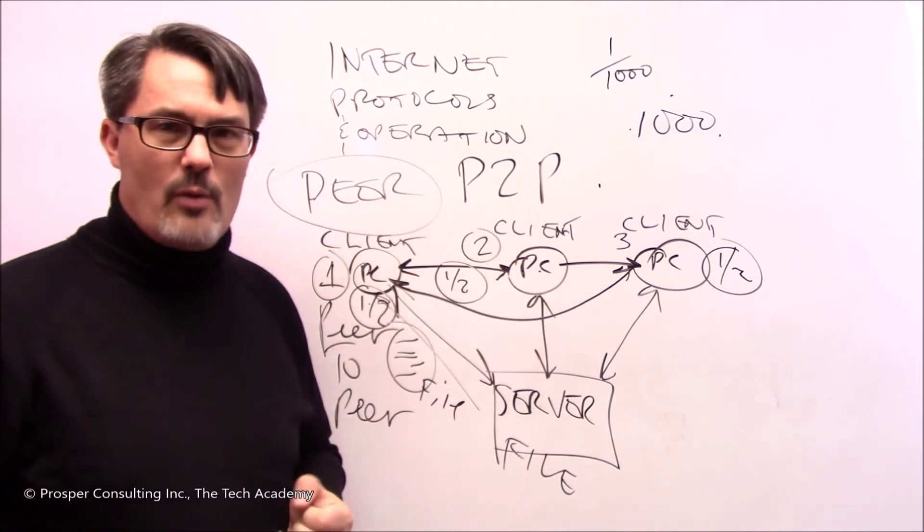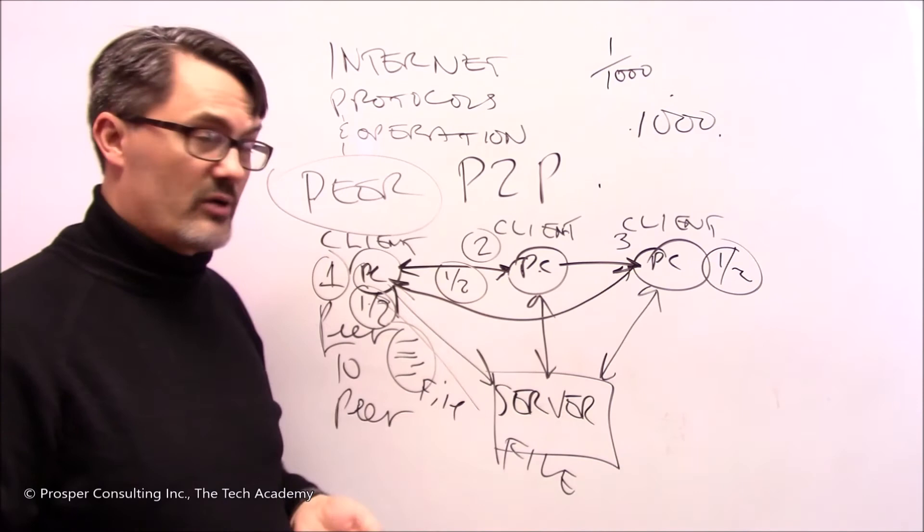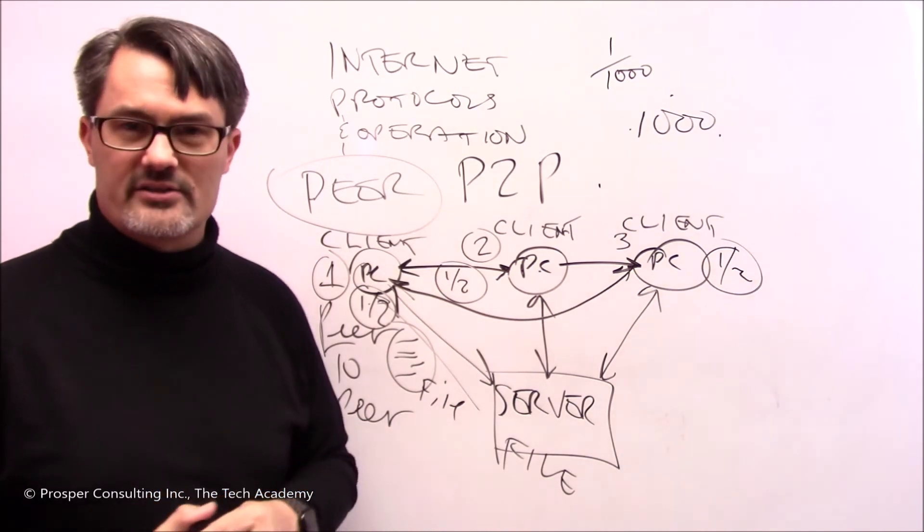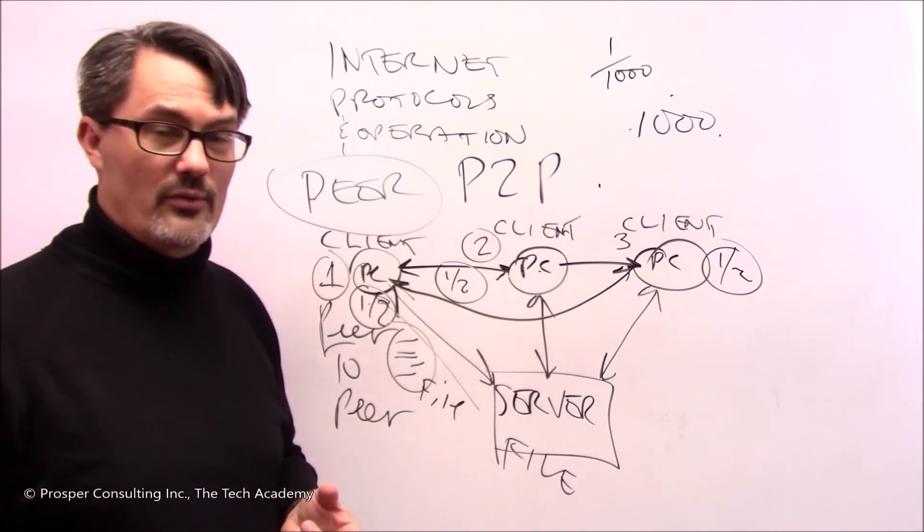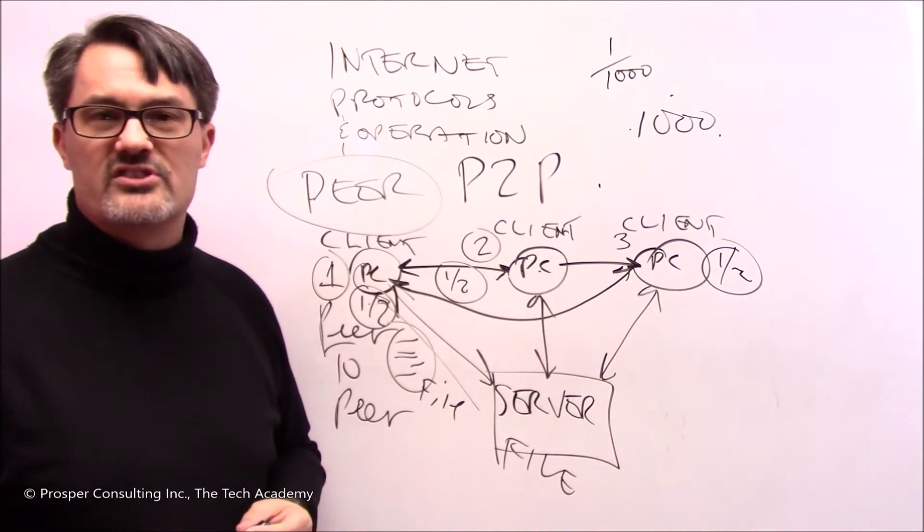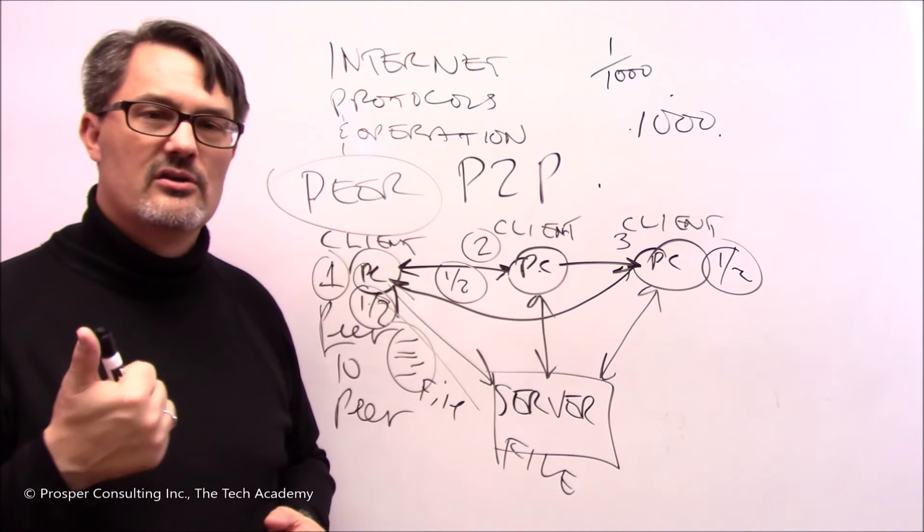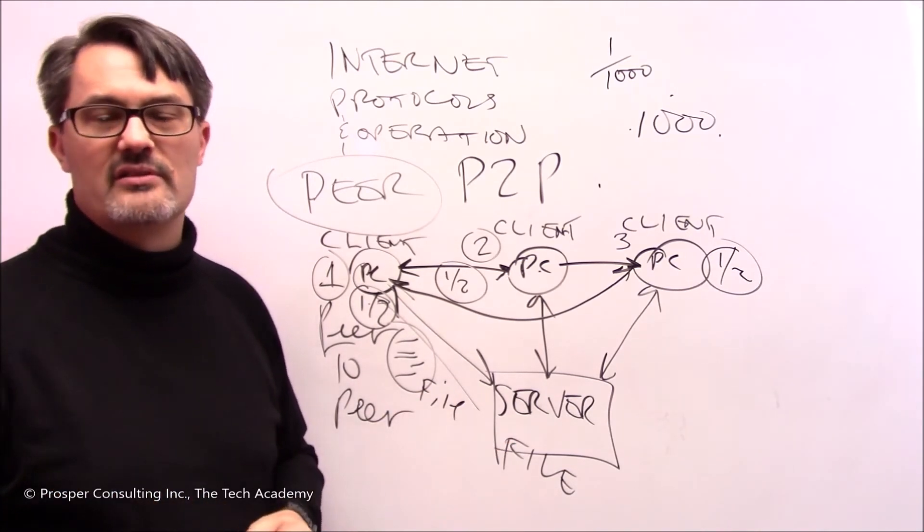Now there are peer-to-peer networks all over the world and they're used generally for transferring large files back and forth. Some of them are used for quite honest purposes. One thing to know as a software developer, if you don't already know this, is that there are peer-to-peer networks around the world that are used to transfer illegally obtained files: computer software, games, songs, movies, that sort of thing.